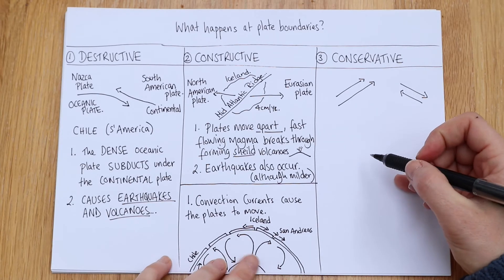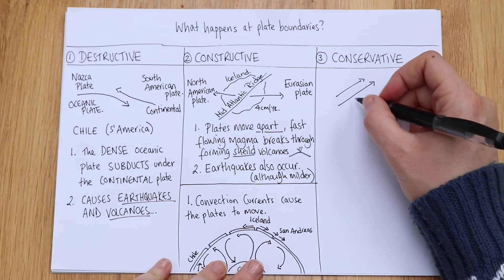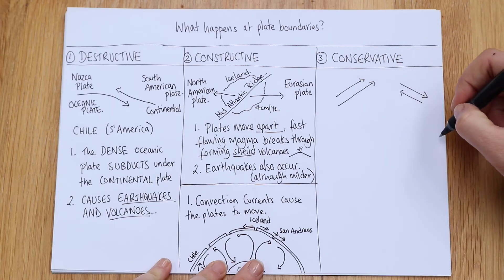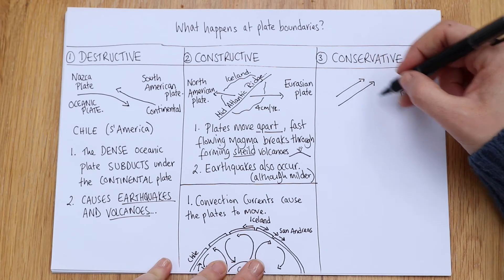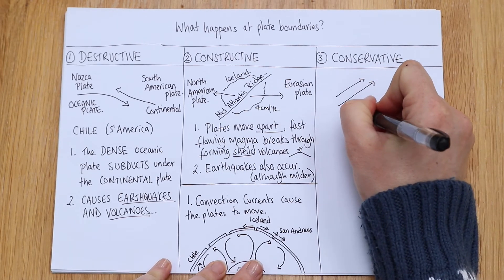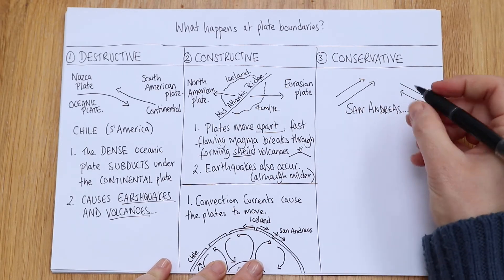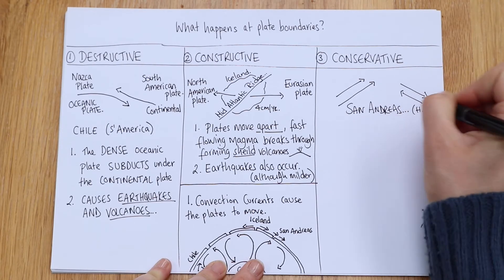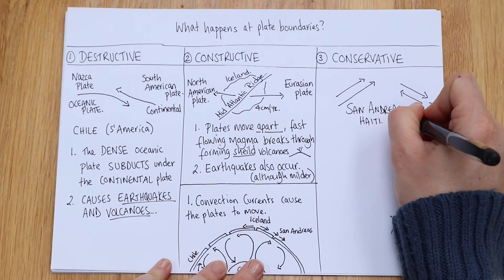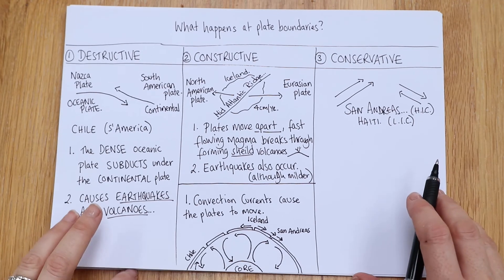Now moving on to conservative. Your case study for this one is the San Andreas fault. If you imagine the west coast of America, it's moving in that northwest direction. Another one that you can use for this, that would be your high-income country, is Haiti in the Caribbean, that would be your low-income country if you wanted to think about two different case studies.